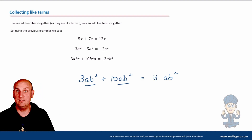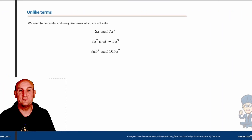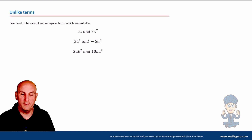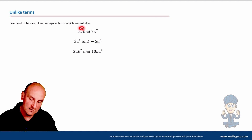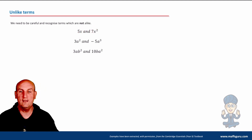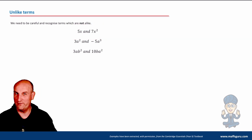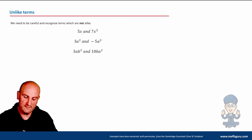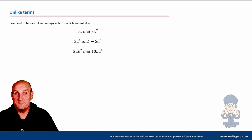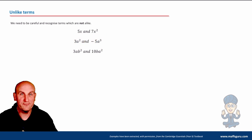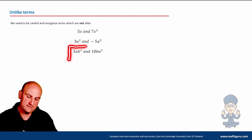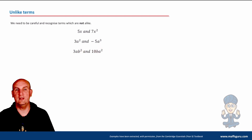Now we can look at cases where terms are NOT the same. Here I've got x but here I have x squared — square xylophones and regular xylophones are not the same. So if someone says simplify, you can't — you leave it as it is. What about a² and a³? That's a floaty two versus a floaty three — square apples versus cube apples, not the same. And likewise ab² versus a²b — the floaty two belongs to different letters, so again they're not like terms.